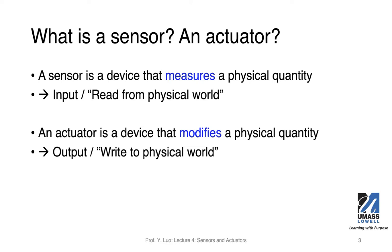On the other hand, an actuator is a device that modifies the physical quality. You can use a device to drive your motor, drive your gear, or you can turn on or turn off the LED. You can have other physical attributes that you want to have an impact on using a device — such a device is an actuator. As opposed to the input, the actuator is an output. We want to have some capability to write to the physical world, to have some impact on the physical behavior of the system.